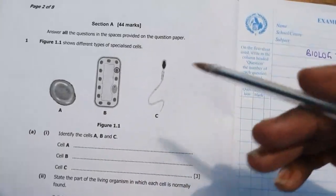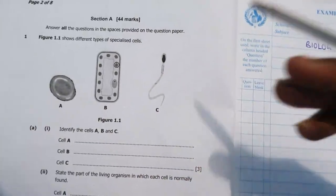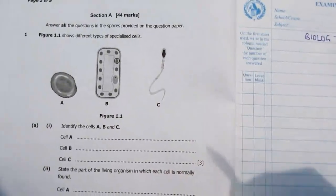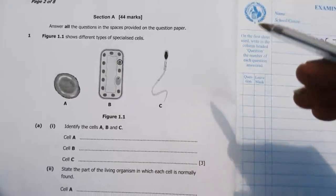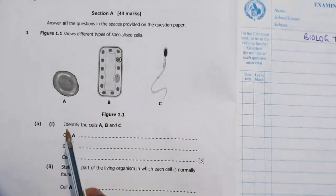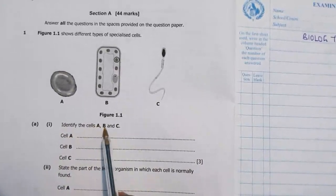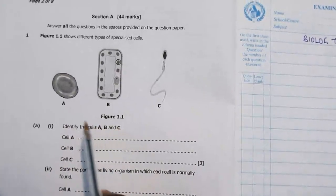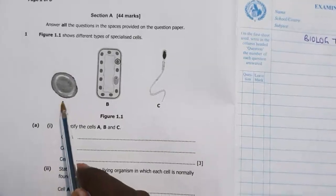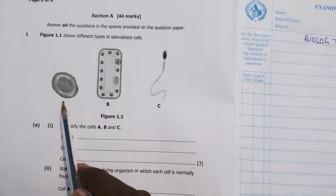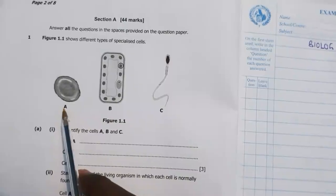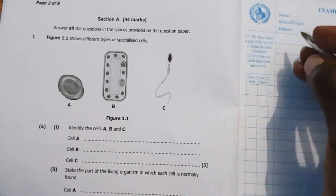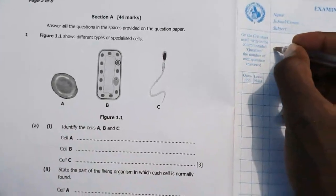Now identify cells A, B and C. What is A? Look at A, in as much as A is an animal cell, it has got its own name.